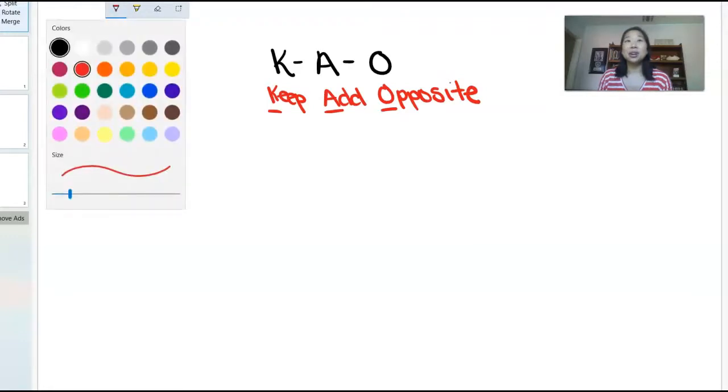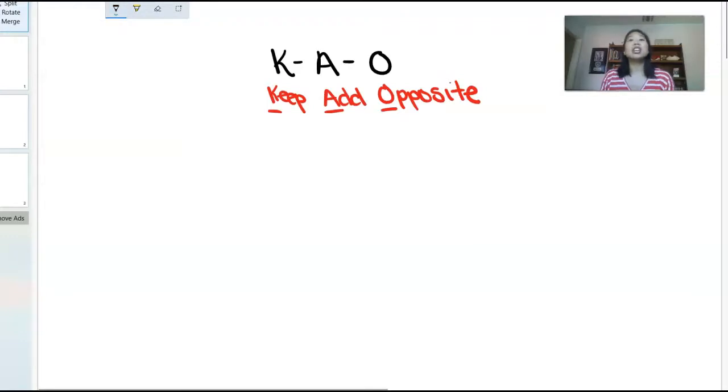Okay, so let's do a couple of examples. So if I had the example, let's see, 5 minus negative 3. Okay, so I'm just actually going to rewrite it down here. So 5 minus negative 3.